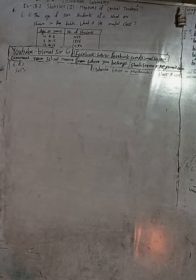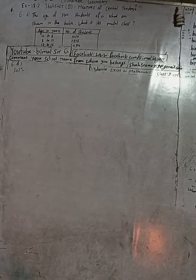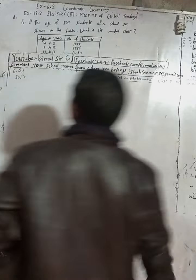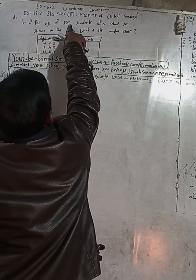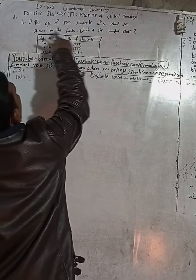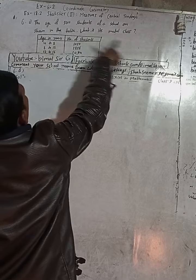This is question number 6D. The question states: The age of 5,000 students of a school are shown in the table. What is the modal class?